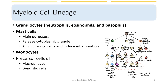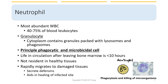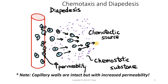Monocytes are more of an intermediate type of white blood cell because they will eventually form macrophages and dendritic cells. Let's look at neutrophils first. They are the most abundant white blood cells — about 40 to 75% of white cells are neutrophils. They are considered granulocytes, meaning their cytoplasm contains granules packed with lysosomes and phagosomes. Their main job is phagocytosis and killing bacteria. They don't live very long — about 10 hours after leaving the bone marrow — so they are not present in healthy tissues. They only rapidly migrate to damaged tissues. The process for neutrophils to migrate to the site of infection is called diapedesis.